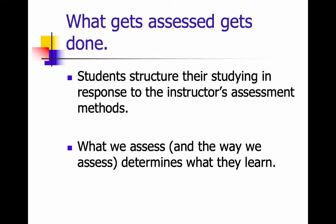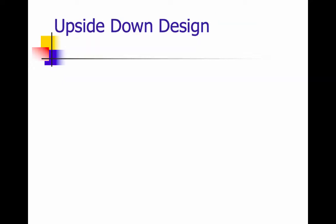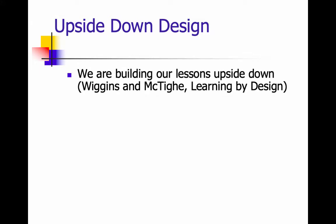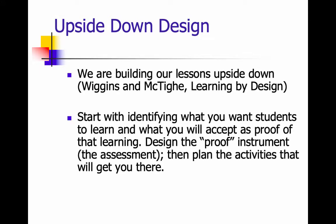What we assess and the way we assess determines how students structure their own learning and what they learn. In the format we're using, we do upside-down design. We start by identifying what students are to learn — that's what we did in stage one — and now we're deciding what we will accept as proof of that learning. This is stage two.